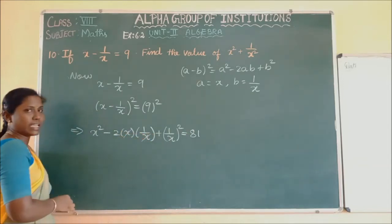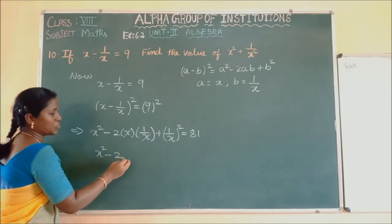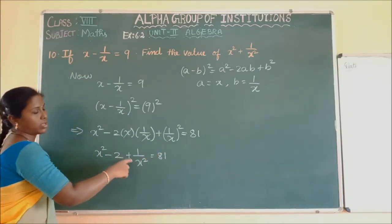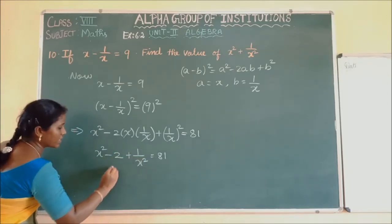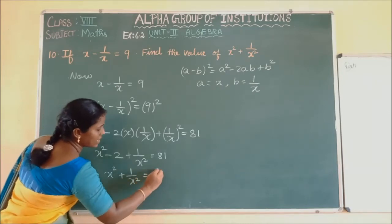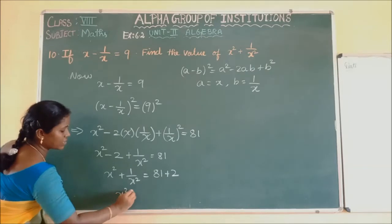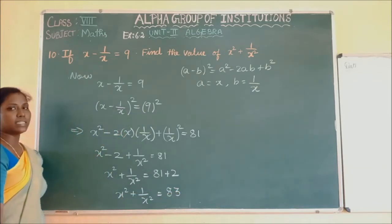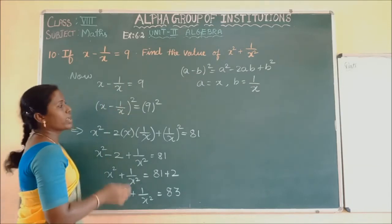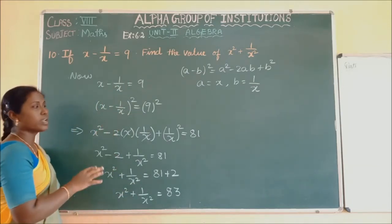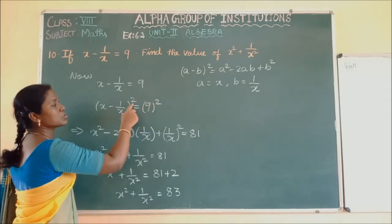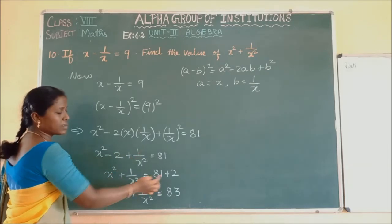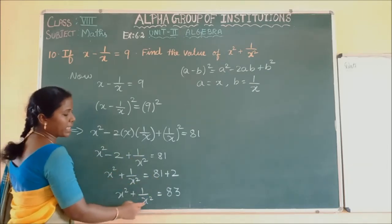Expanding: X square minus 2 times X times 1 by X plus 1 by X whole square equals 81. The X cancels, giving X square minus 2 plus 1 by X square equals 81. We need X square plus 1 by X square, so moving minus 2 to the other side gives X square plus 1 by X square equals 81 plus 2 equals 83.